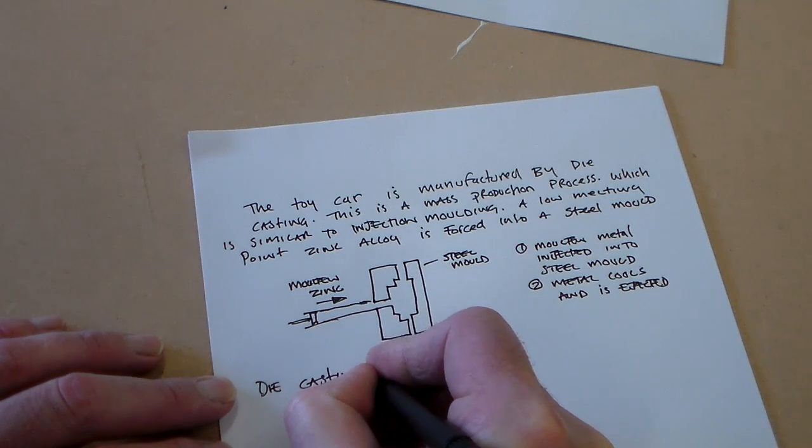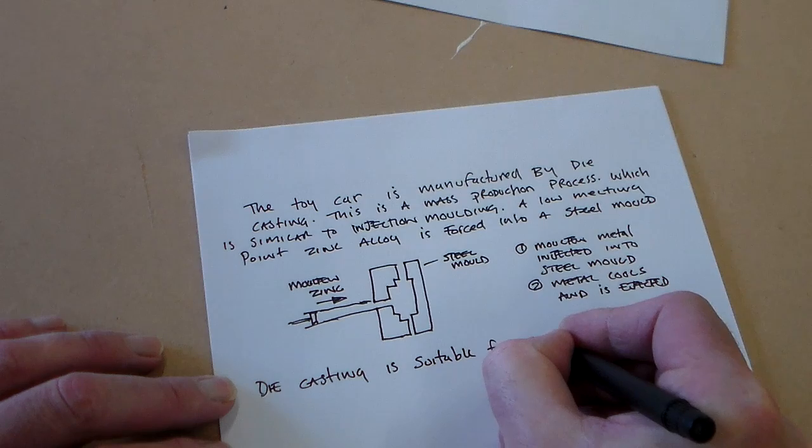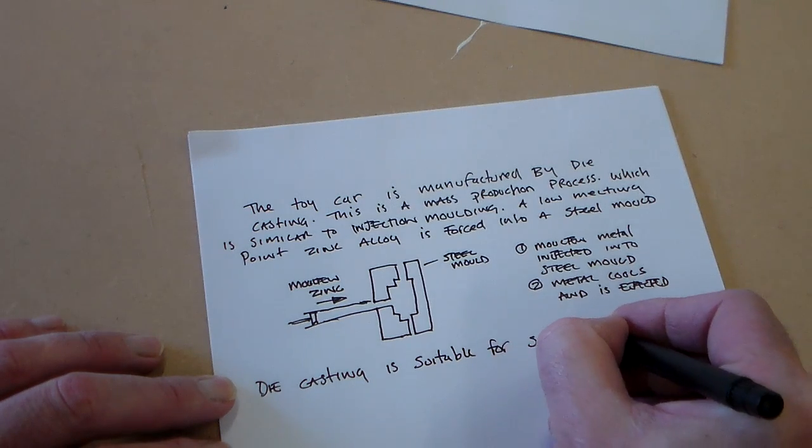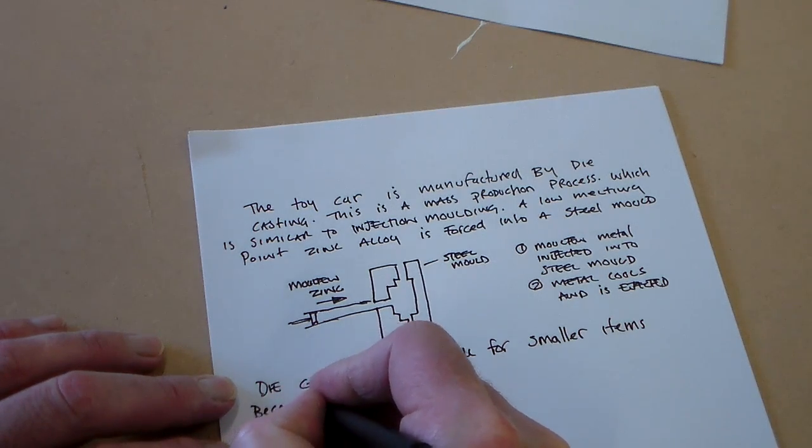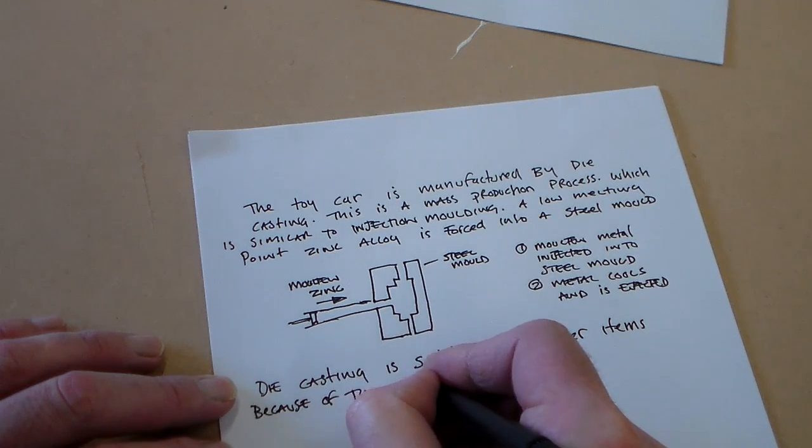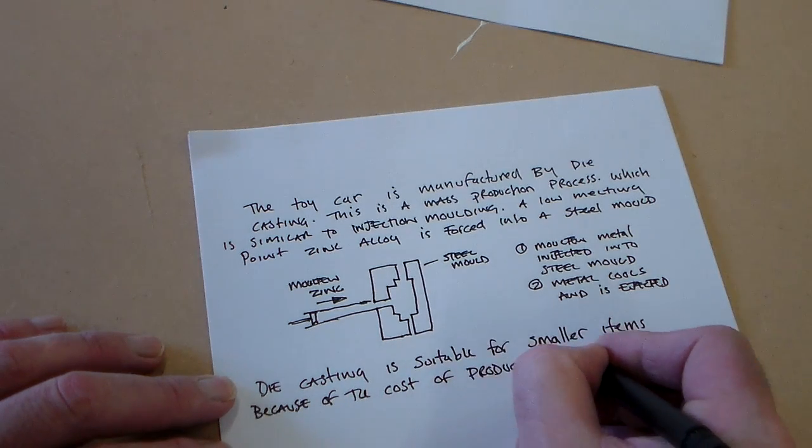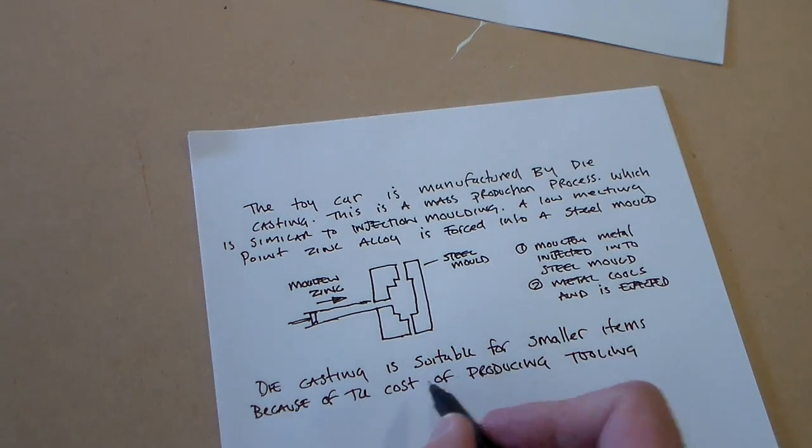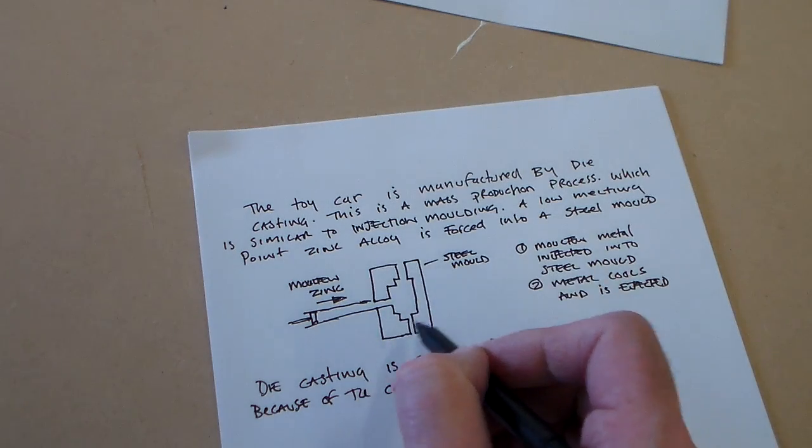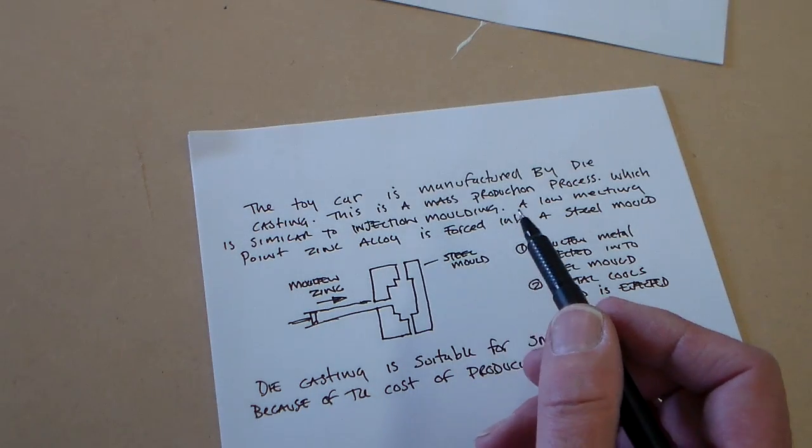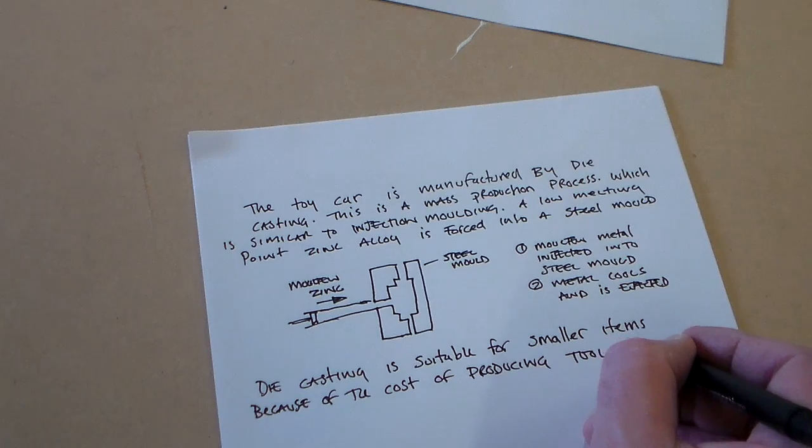So we can say that die casting is suitable for smaller items because of the cost of producing tooling. So obviously, to produce the steel molds is expensive, and to produce an item for maybe an item like this locomotive wheel would have been prohibitive or too much of a cost. But to make it for the model car is quite reasonable.